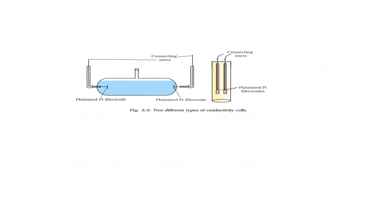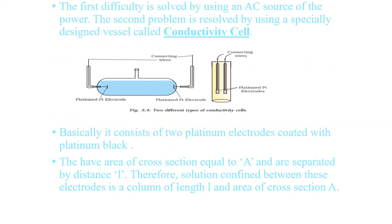So how do we resolve these two problems? The first difficulty is resolved by using alternating current instead of DC current. The second problem is resolved by using a specially designed conductivity cell, which consists of two platinum electrodes.